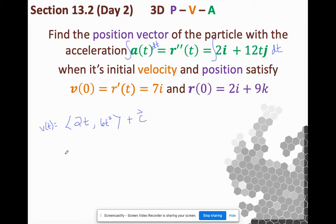Right? So, I can think of this as 2t i and 6t squared j. And since I do have a k, I can think of a 0k, but I don't have to add that. Plus what? 7i. So, what does that turn into? Combining like terms, I get 2t plus 7i and 6t squared j. That's velocity.